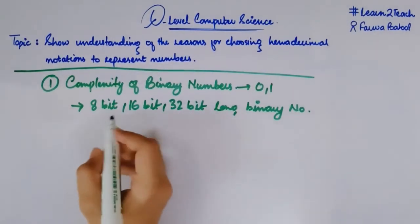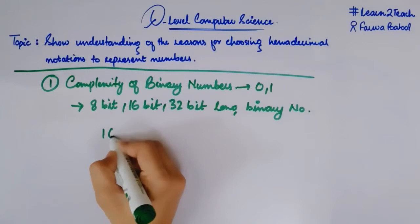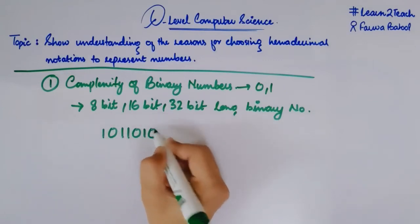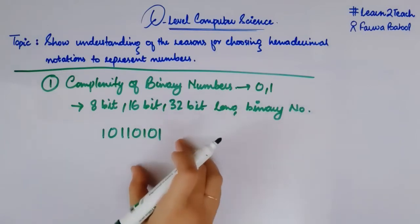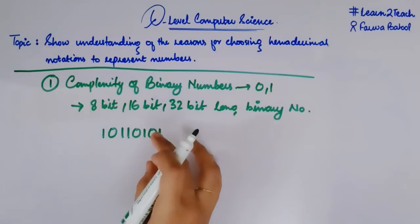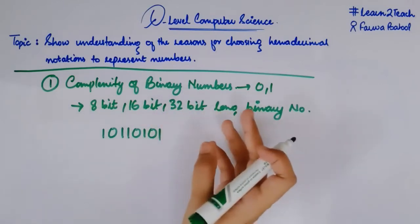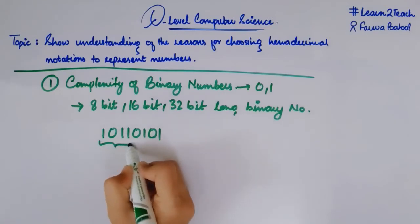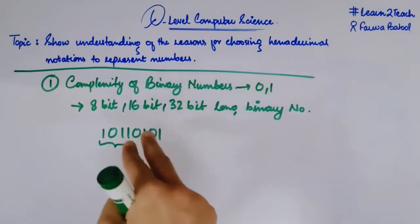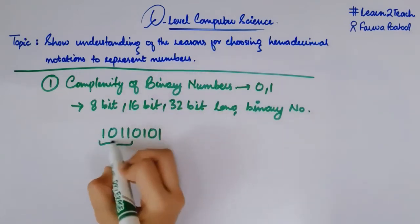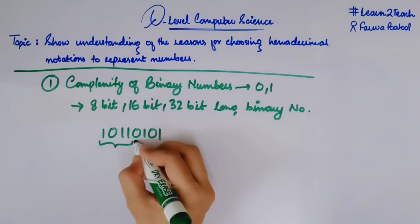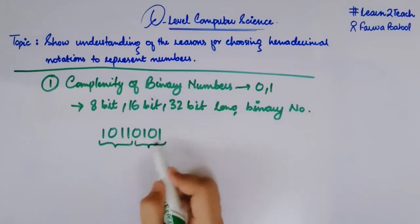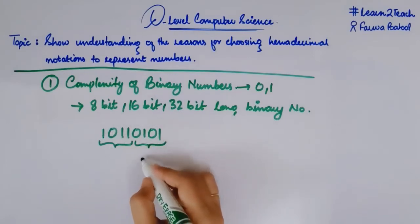Let's suppose I have a binary number with 8 bits: 1, 0, 1, 1, 0, 1, 0, 1. So to make this number more readable and easier to express, I am going to divide it into two parts. I am going to make two groups of this binary number — these are my four upper bits and these are my four lower bits — and each group is going to be represented as a hexadecimal digit.